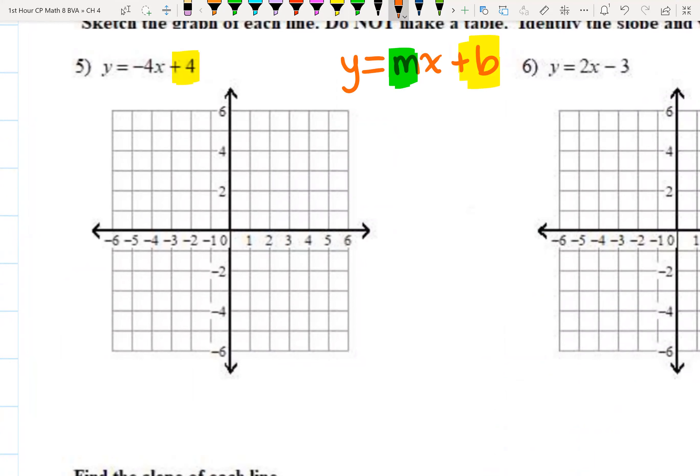Here is our b value, or y-intercept is four in number five, and our slope is negative four. We're going to write that as a fraction, so we're going to put it over one like that.